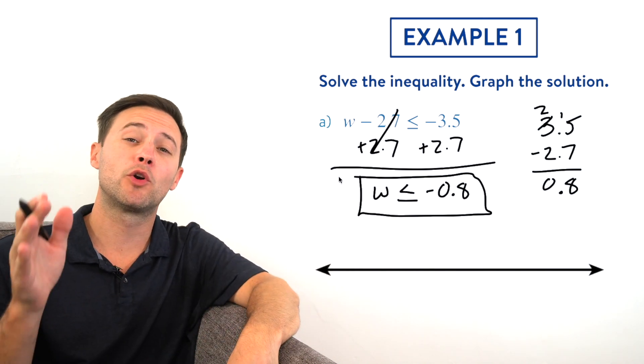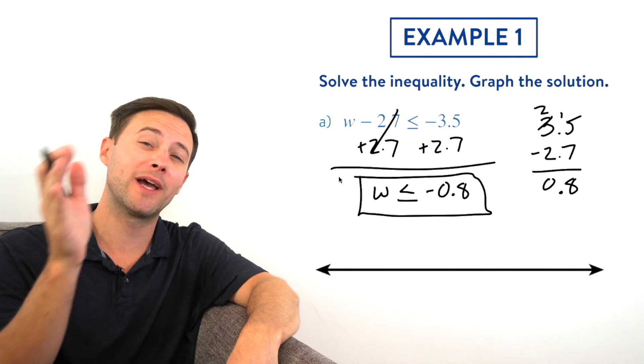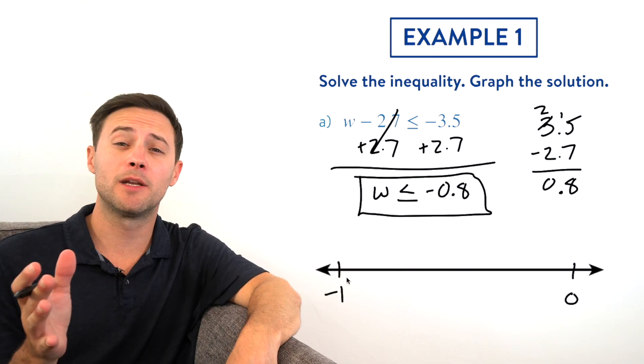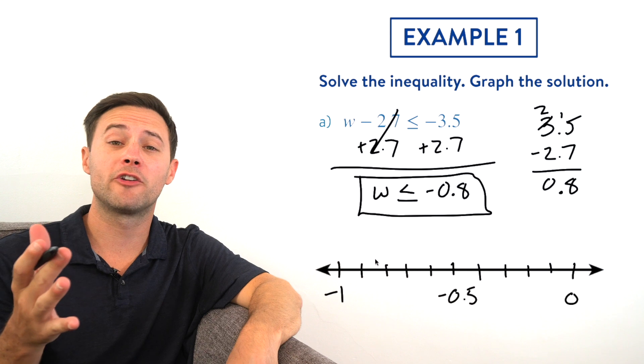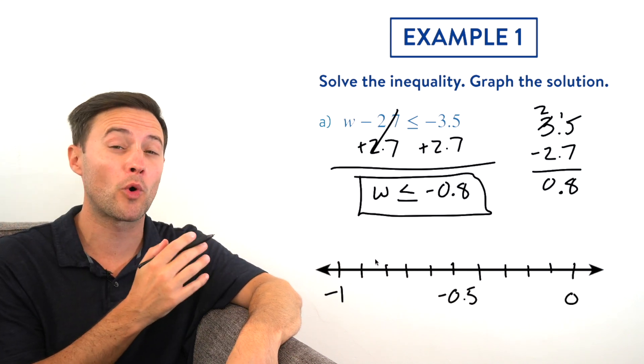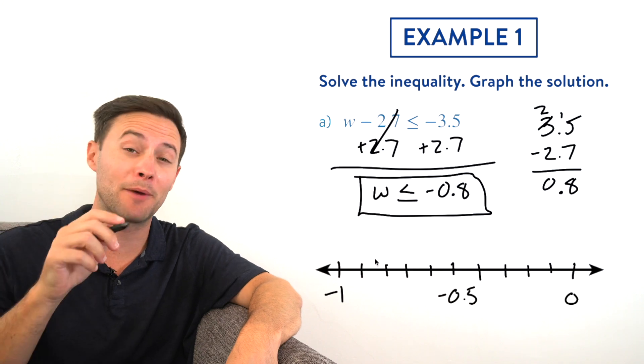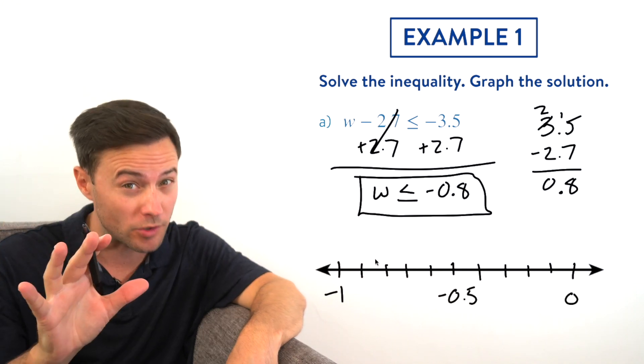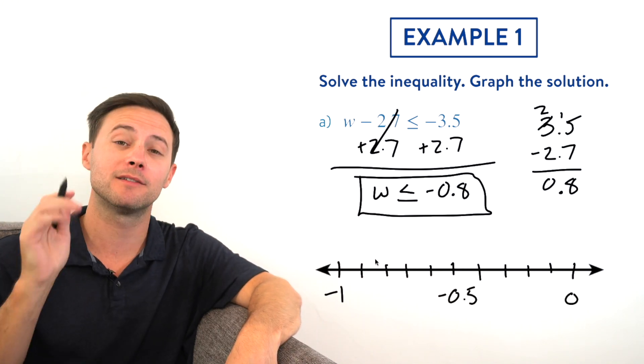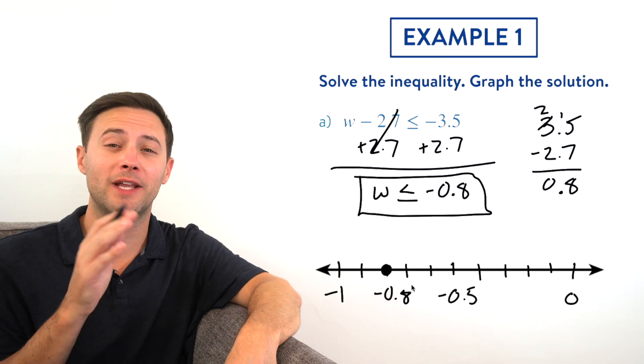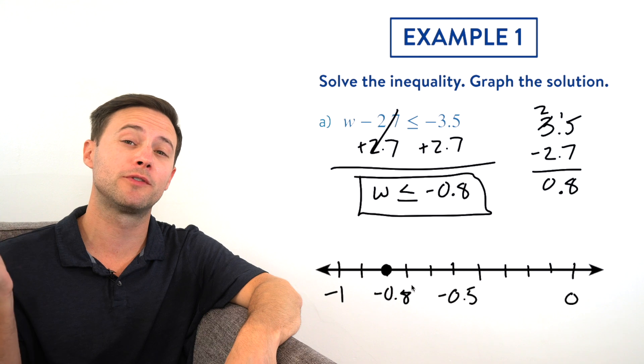Negative 0.8 is going to be in between 0 and negative 1, so that's going to be my outline, and then I just need to break that into tens. Now we're ready to graph. At negative 0.8, I'm going to put a closed circle because w is less than or equal to negative 0.8, so we need to include it. And then, because w is less than or equal to negative 0.8, the arrow goes to the left.